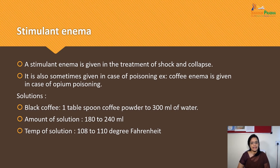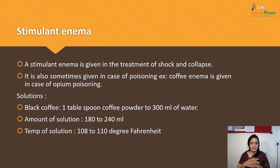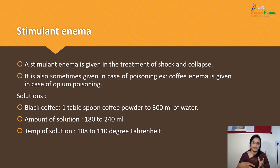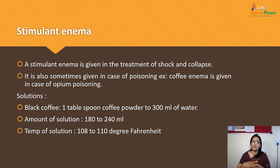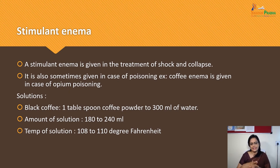Stimulant Enema is given in the treatment of shock and collapse. It is sometimes given in cases of opium poisoning — for example, a coffee Enema: one tablespoon of coffee powder to 300 ml of water. The temperature is maintained at 108 to 110°F, and the volume is 180 to 240 ml.